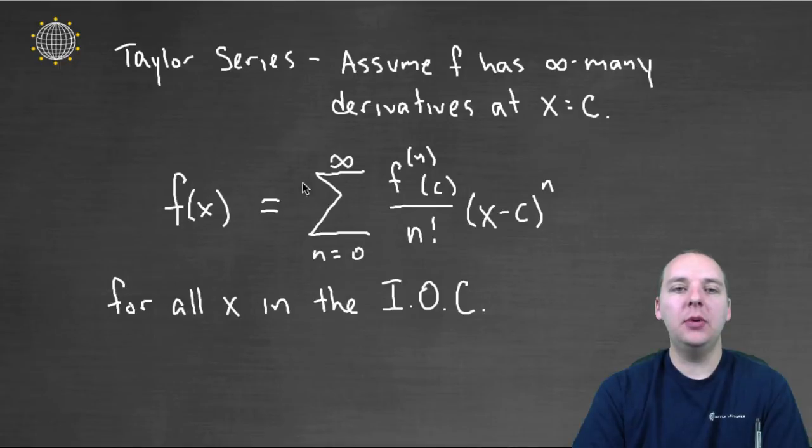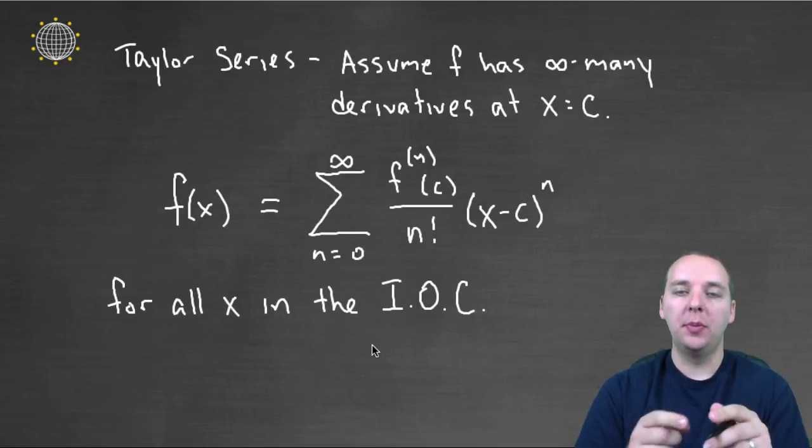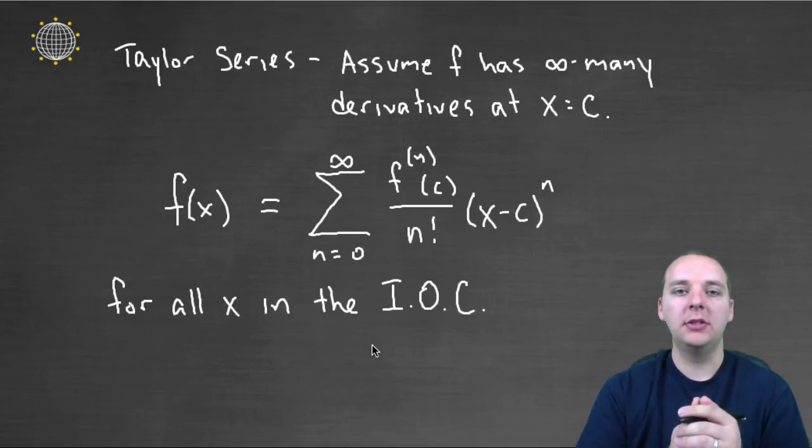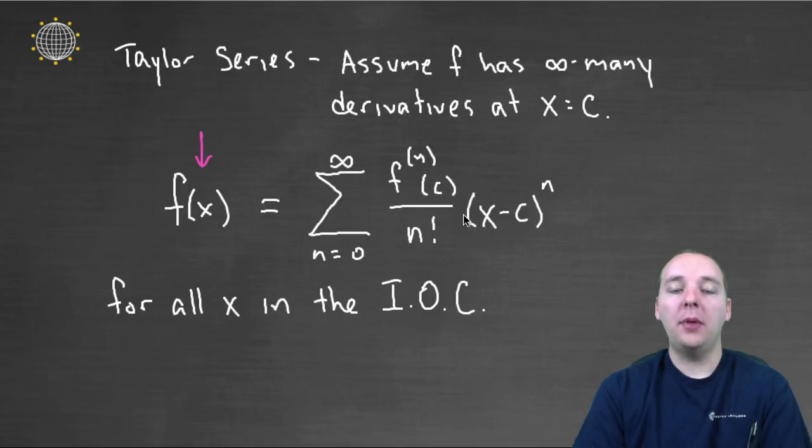Now, the catch is, it doesn't equal the power series for all x values. It only equals the function for all the x's that are in your interval of convergence, if you remember like the radius and interval of convergence. Because your function might be defined at 10, but if your power series here...